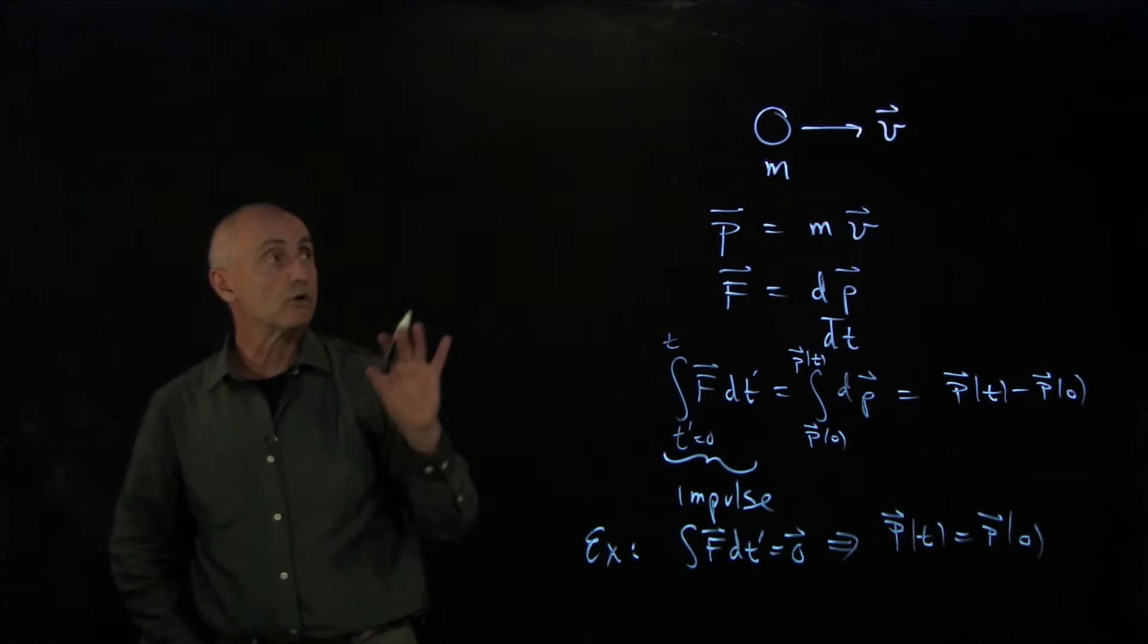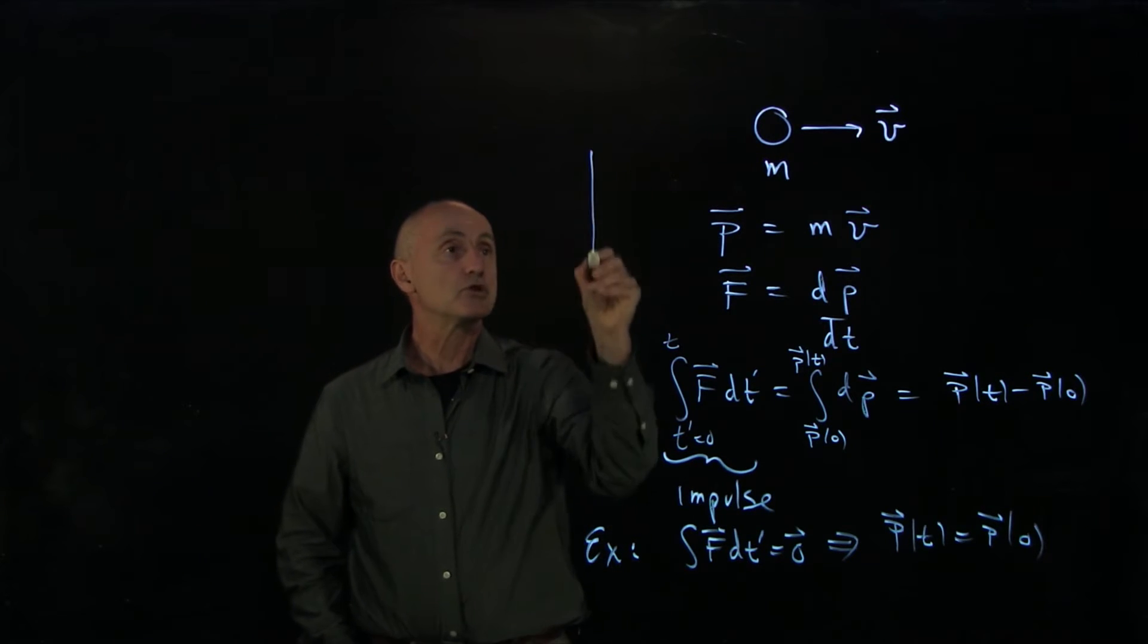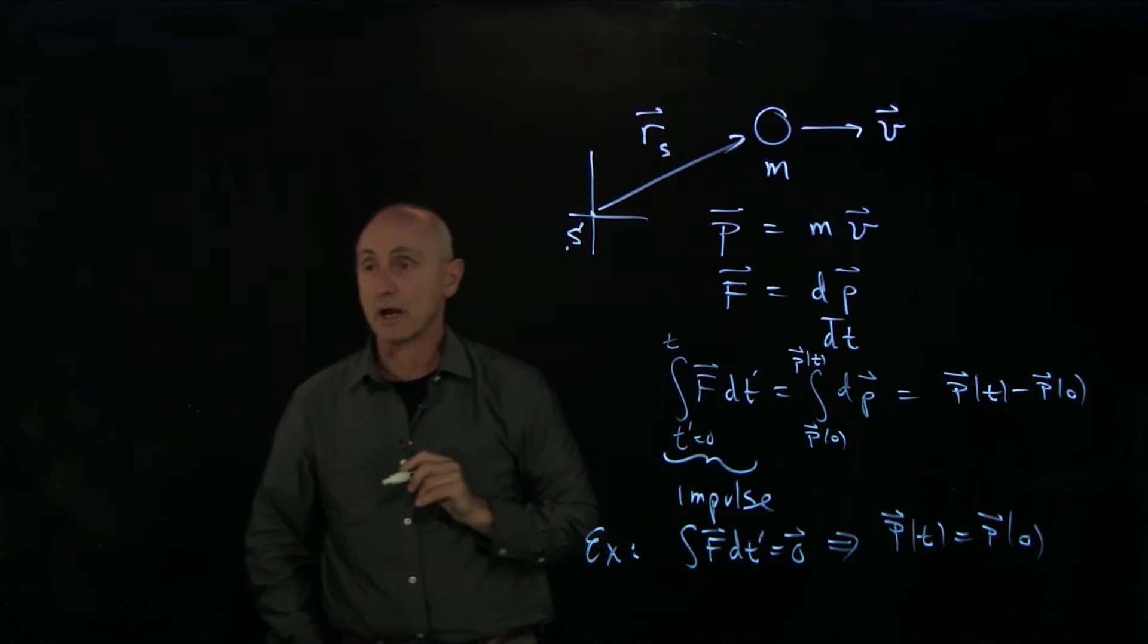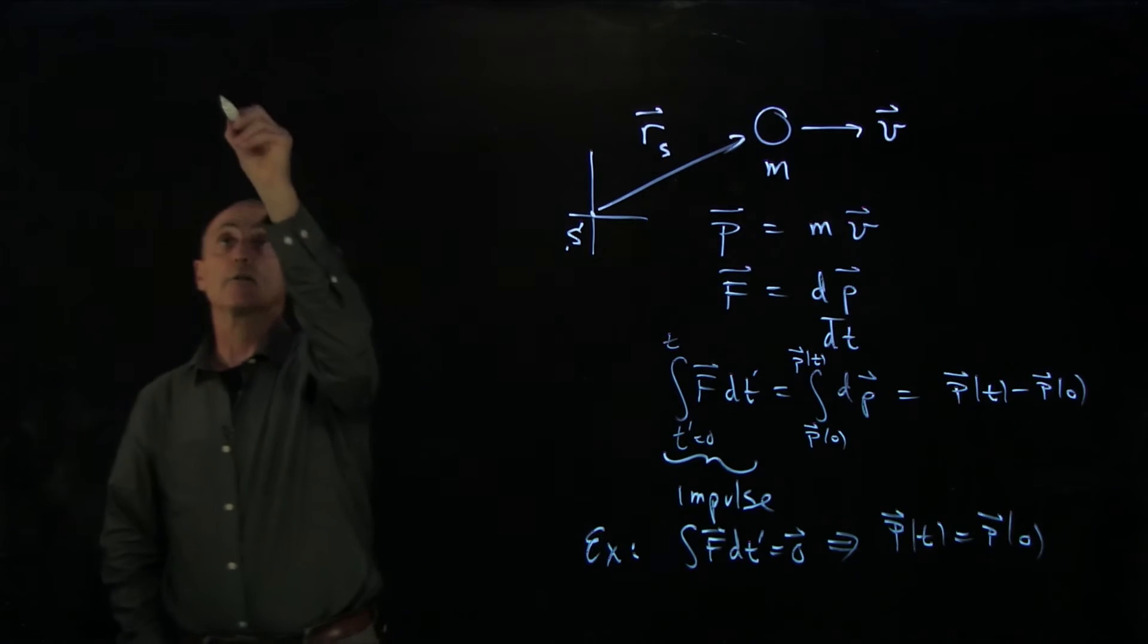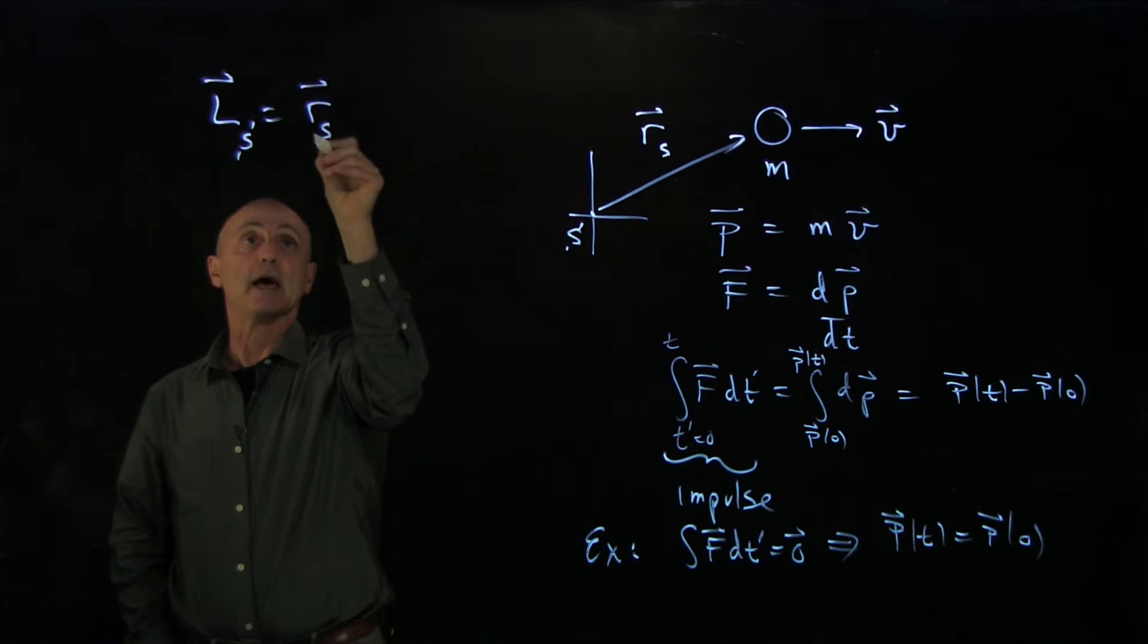Now let's consider the same thing for angular momentum. The only difference is that we choose some point s, and we'll write the vector rs to where the object is. Our angular momentum we defined about the point s was the vector from s.